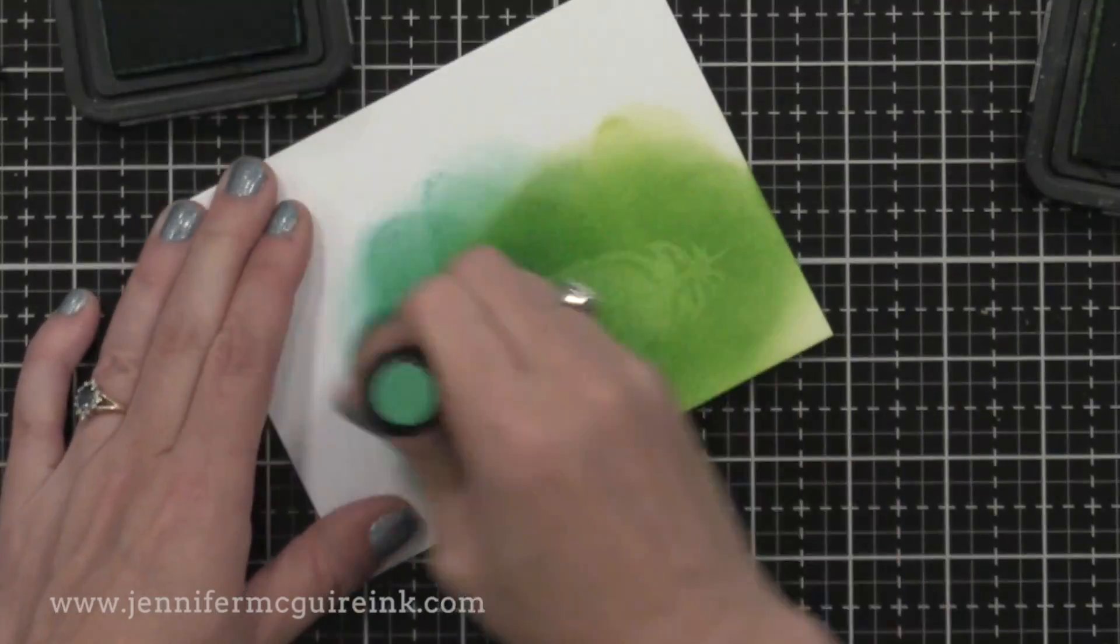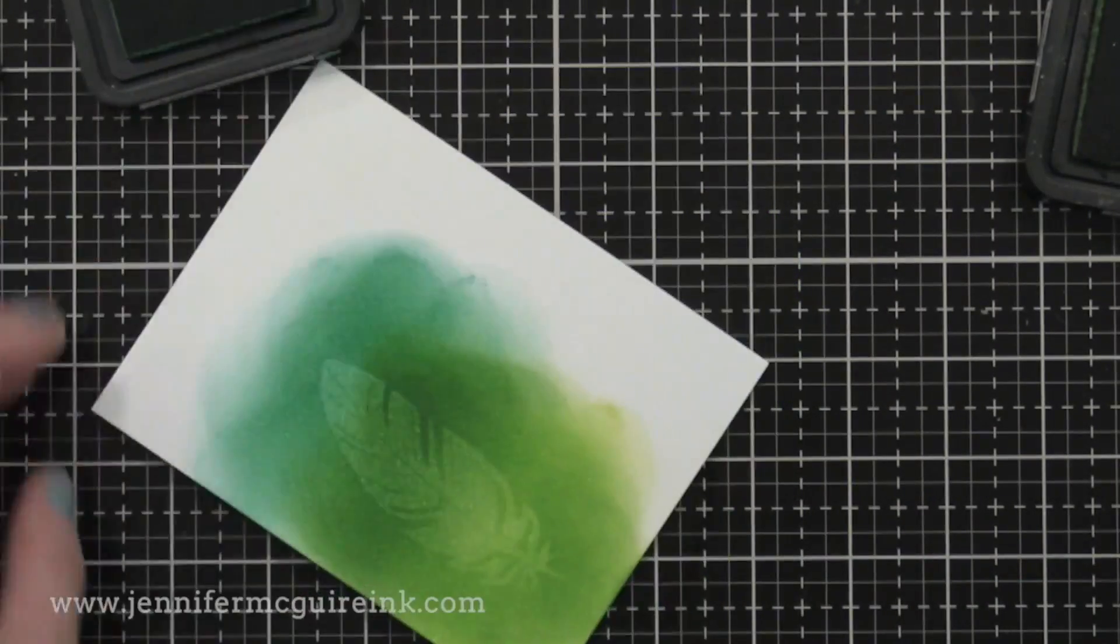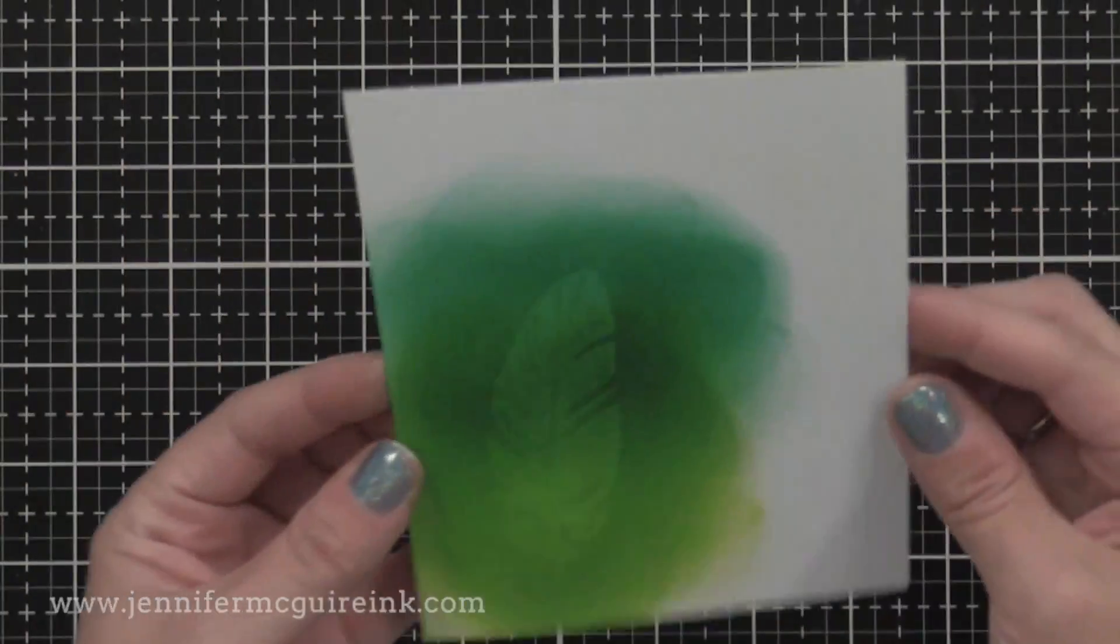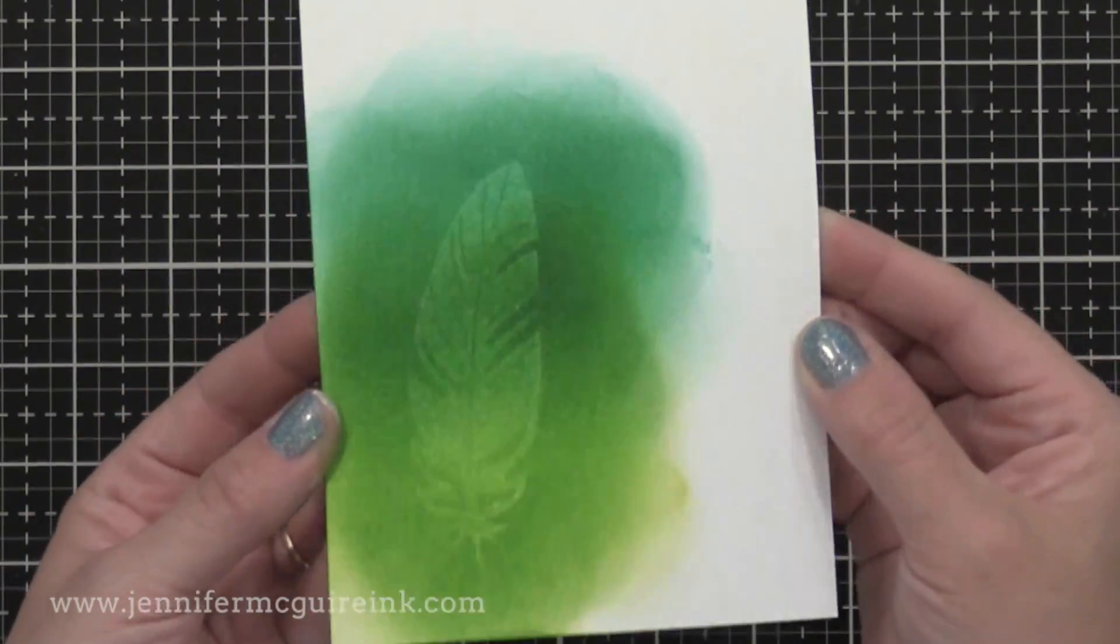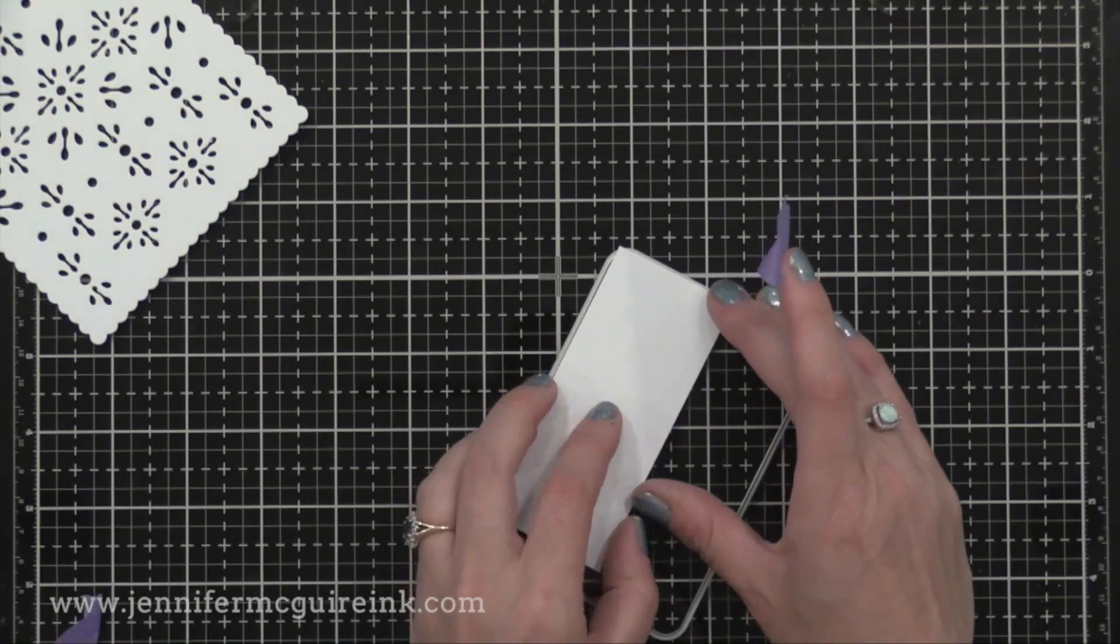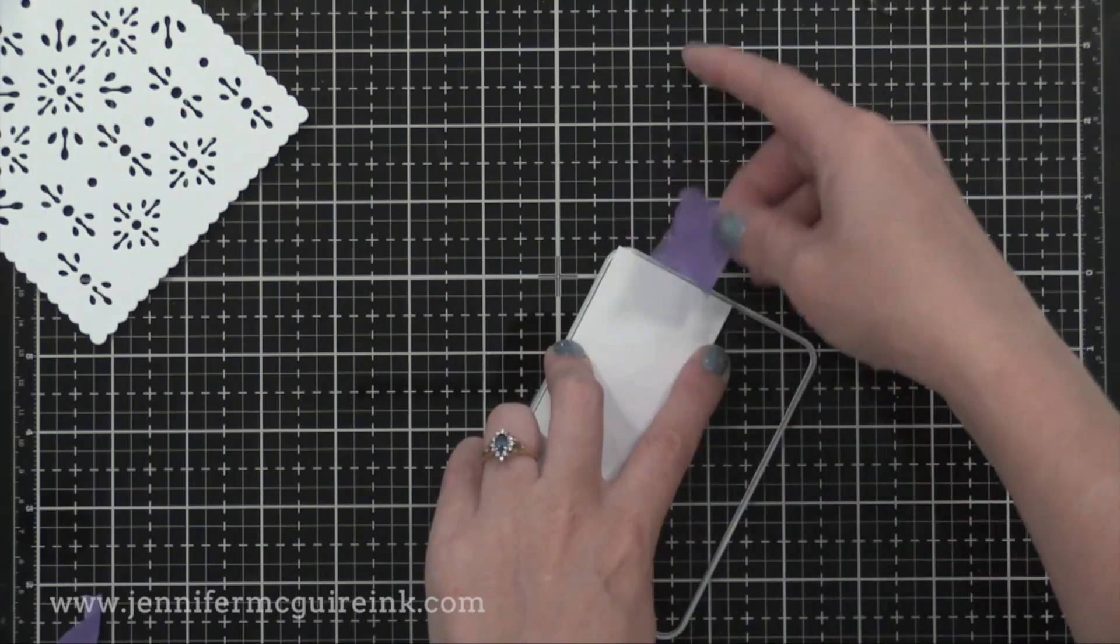And now I'm applying distress ink over the top. You can use other dye inks if you wanted to. You can see this is very subtle, definitely the most subtle of the resist techniques, but it is excellent for backgrounds. I decided to use it for a focal point on this card, but I do think it's best used for backgrounds.